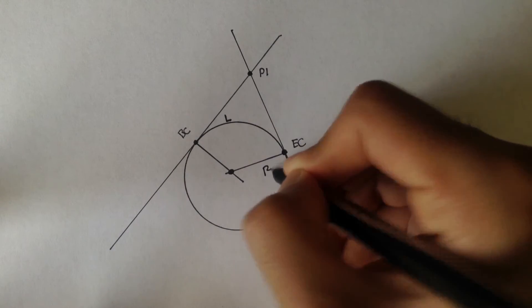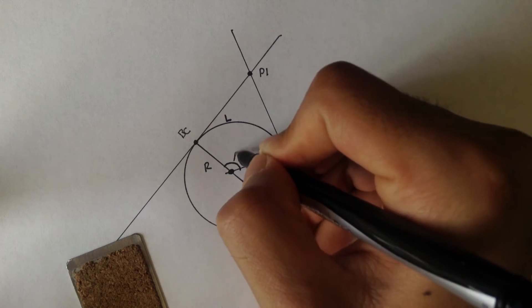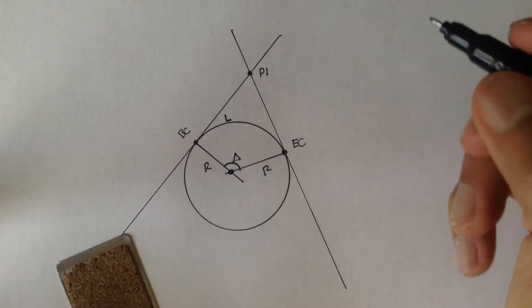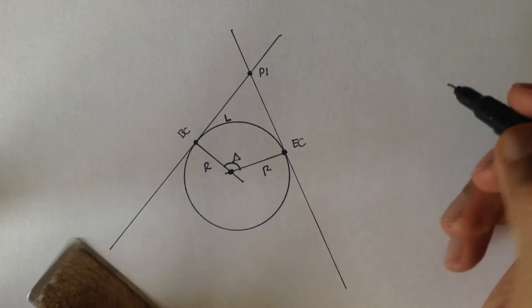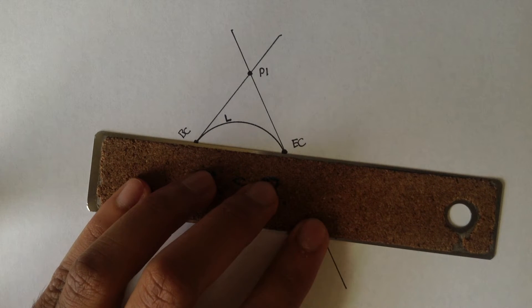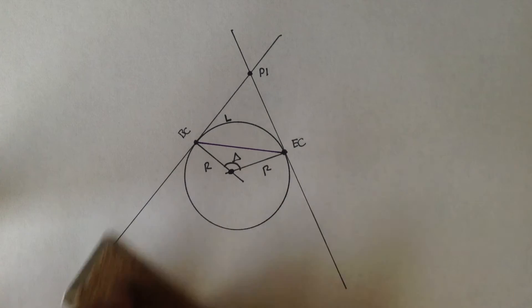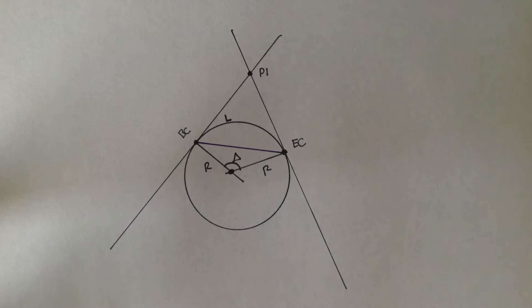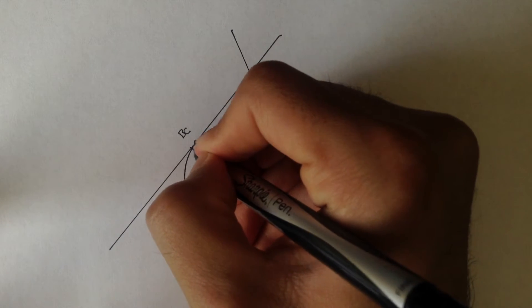You have these two radius distances, both R. This angle here is delta. We want to figure out what the long chord is. A chord is just the straight distance from one point on the circle to another point on the circle. In this case, we want to figure out the long chord from BC to EC — always. And remember, these tangent lines meet the radius at right angles.